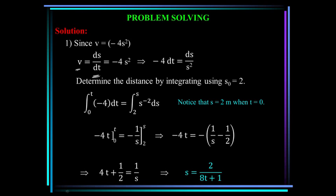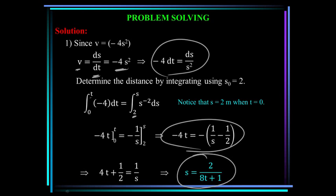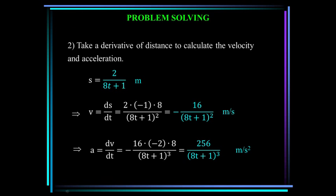Velocity ds/dt equals -4s². Collecting terms, we get this equation. We can integrate that equation to get the distance. We integrate from zero to t; at time t equals zero, s is 2. This integral comes out to be this right here, which simplifies to this. So now we have an equation of distance as a function of time.